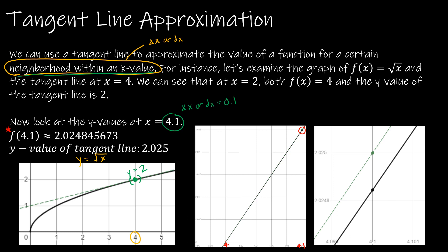They look almost exactly the same. But if I zoom way, way in, you can see that they are not in fact the exact same point — the value on the black line, the original function, is 2.024845673, and at the tangent line point the y value is 2.025. Those values are almost identical, and so that's why we can use a tangent line approximation.